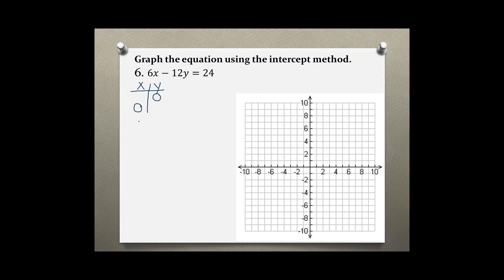So in the original equation, starting with our x-intercept, 6x minus 12y, we are plugging in a 0, is equal to 24. This is just 0, so we are left with 6x equals 24. Dividing both sides by 6 leaves us with x equals 4. So our x-intercept is at 4, 0.